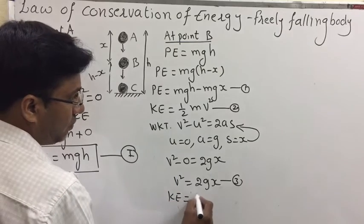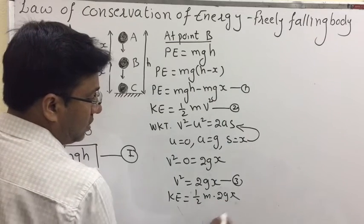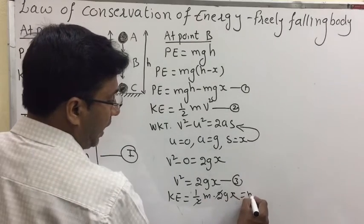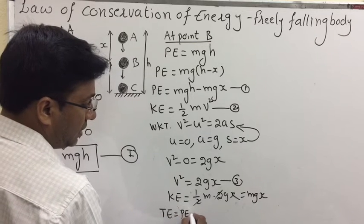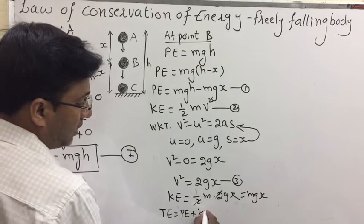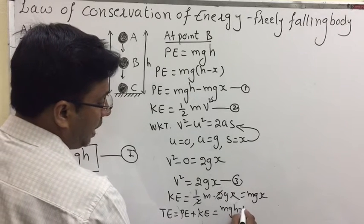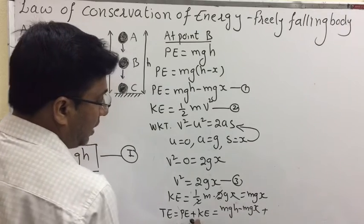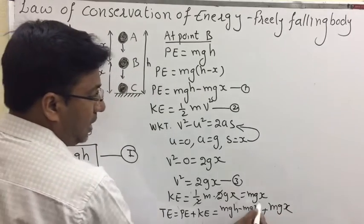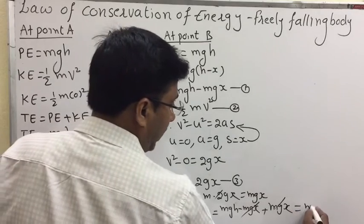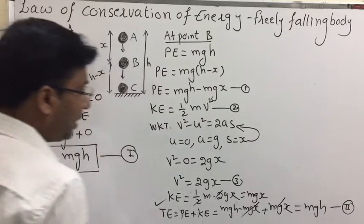Substituting v squared equals 2gx into the kinetic energy formula: KE equals half m times 2gx, and the 2s cancel, giving kinetic energy equals mgx. Total energy at point B equals potential energy plus kinetic energy, that is mgh minus mgx plus mgx. The mgx terms cancel, giving total energy at point B equals mgh. This is equation number two.